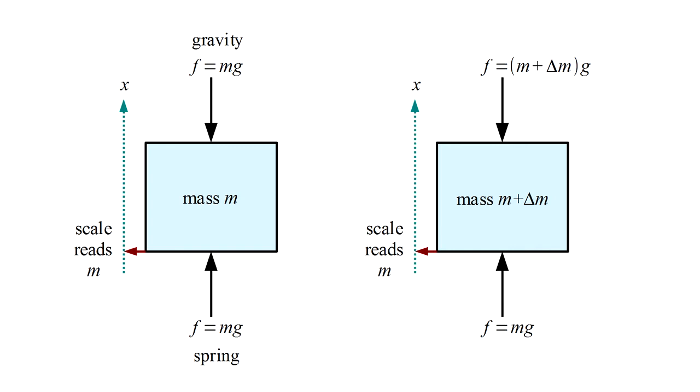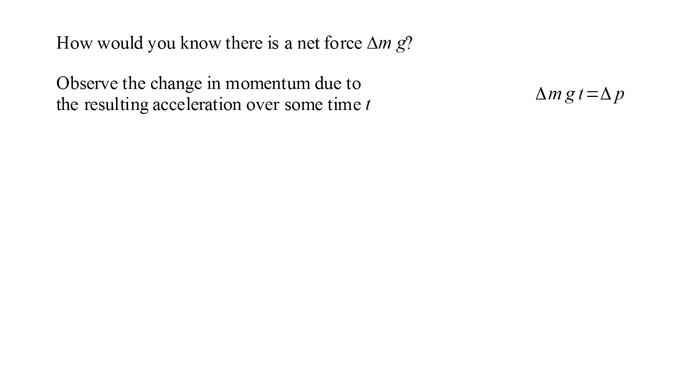If this is true, then there is a net downward force, delta m times g, acting on the box. To choose between these claims, you have to show that this net force does or does not exist. How can you do this? A force produces an acceleration. An acceleration acting over a given time produces a given change in momentum. So if this net force is present, and we watch the box for a time t, we'll see it gain a momentum delta p equal to delta m times g times t.